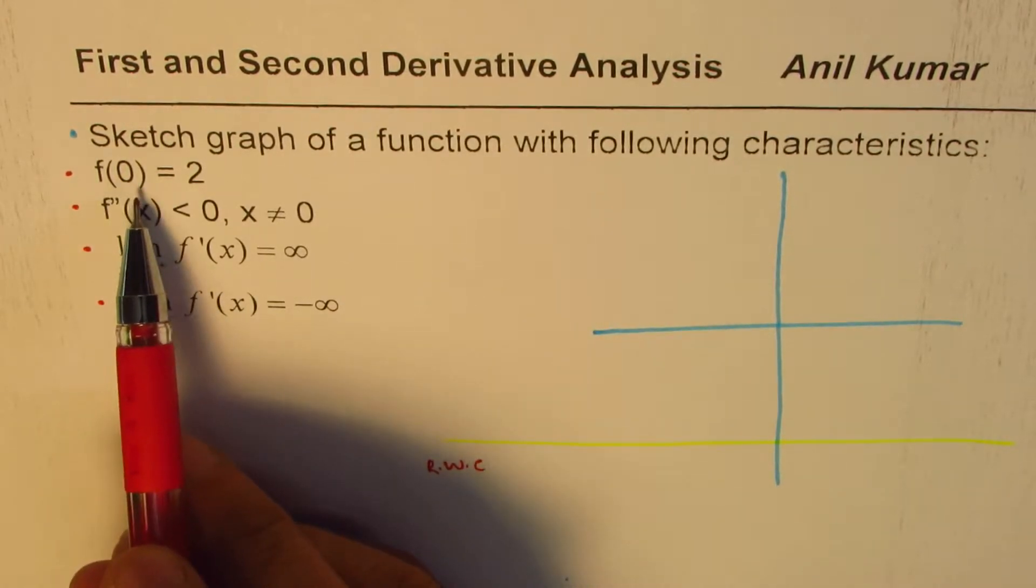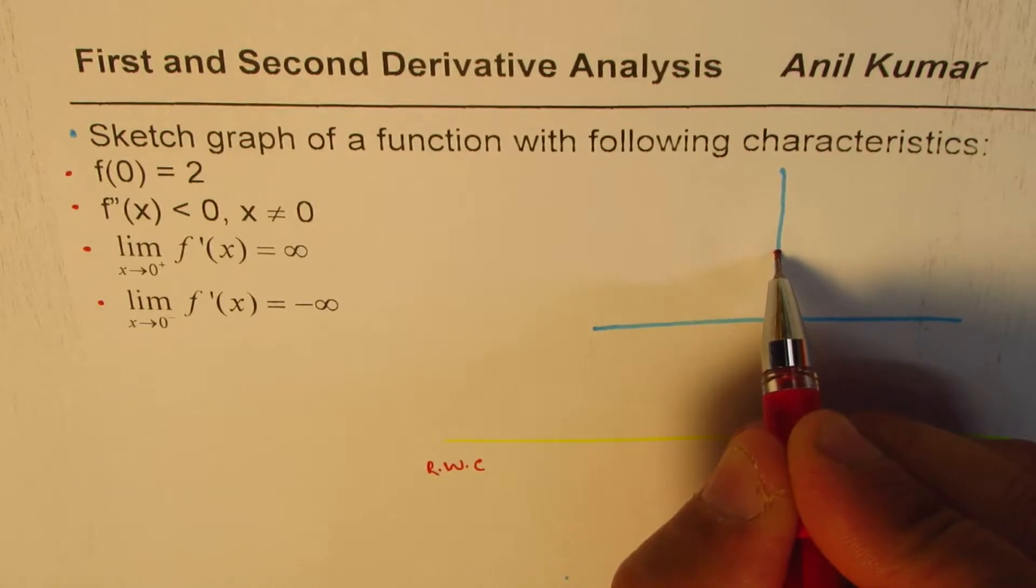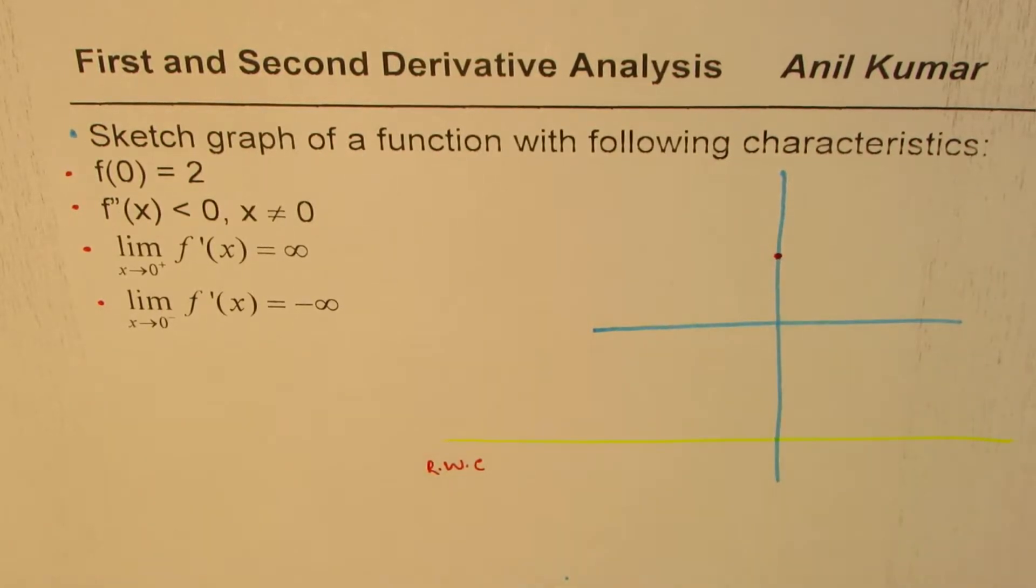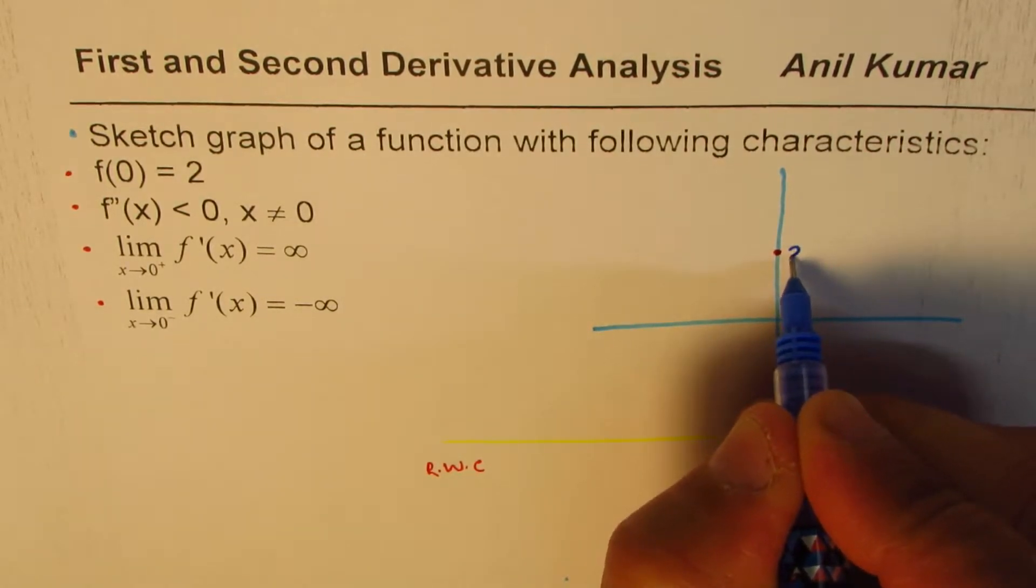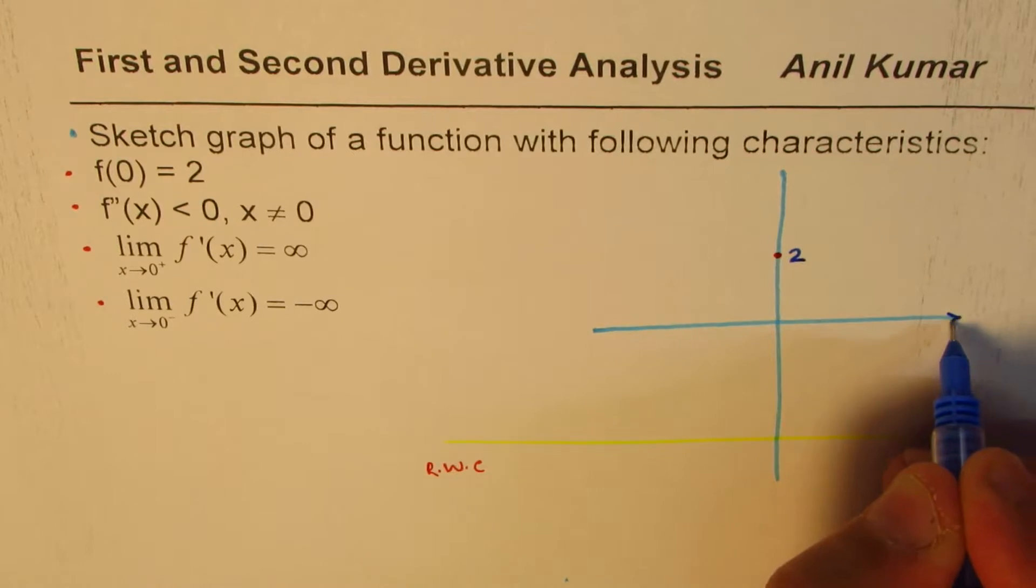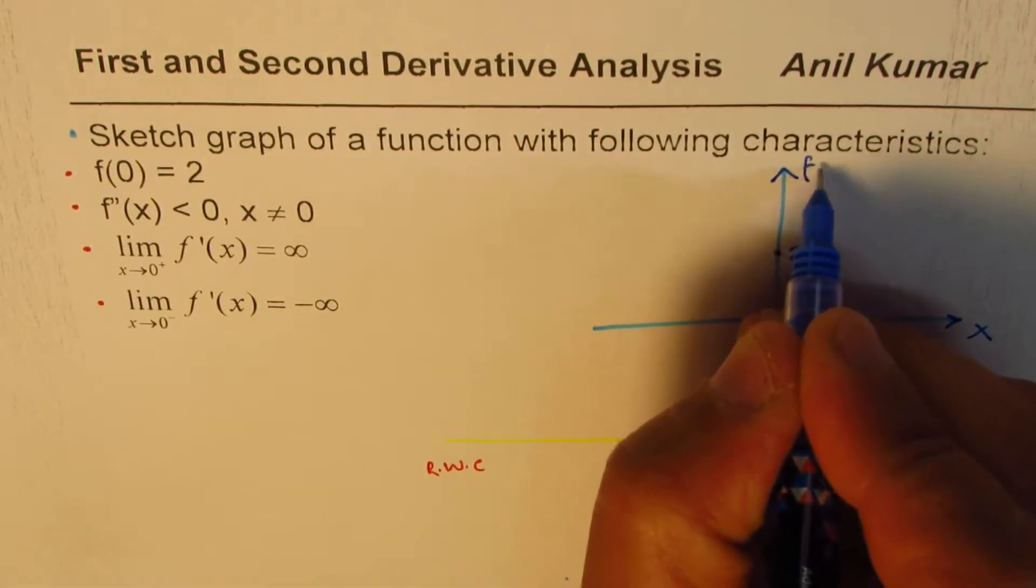We are given at 0, the value of the function is 2. And let us say this is 2 for us. So at 0, we are given a point, which is the value of the function at 2. That becomes the value of the first condition. This is the x-axis and that is the function f(x).